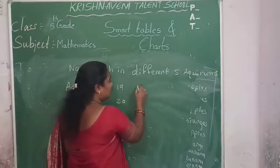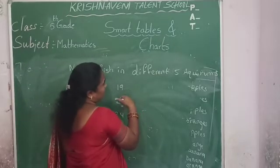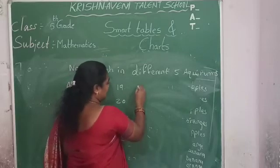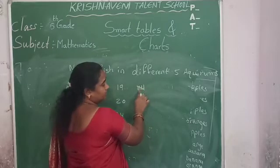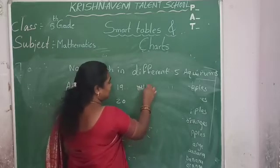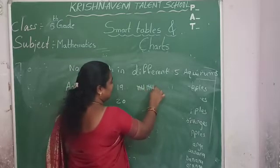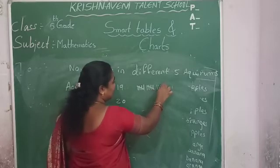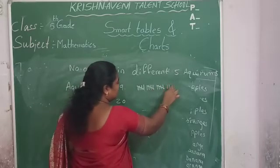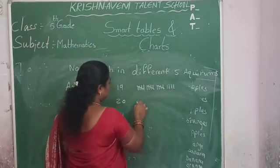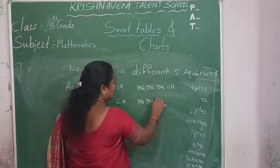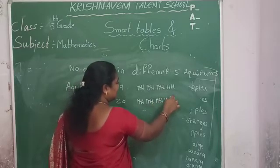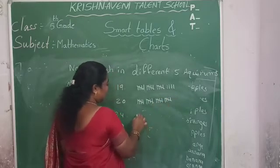First, we draw 19 vertical lines — making groups of five: one, two, three, four, then a cross for five; then six through ten with another cross; then eleven through fifteen with another cross; sixteen, seventeen, eighteen, nineteen. That represents 19. For 20, we add one more mark. For aquarium three with 24 fishes, we continue counting up to 24. Each vertical line represents one number.